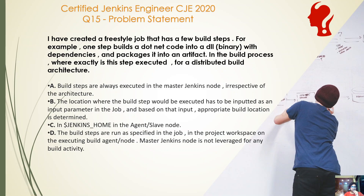Option A says build steps are always executed in the master Jenkins node, irrespective of the architecture — completely incorrect. Option B says it is never executed in the master Jenkins node, mostly if the number of executors is set to zero. And the location where the build step would be executed has to be inputted as an input parameter in the job, based on which the appropriate build action is determined — again completely incorrect.